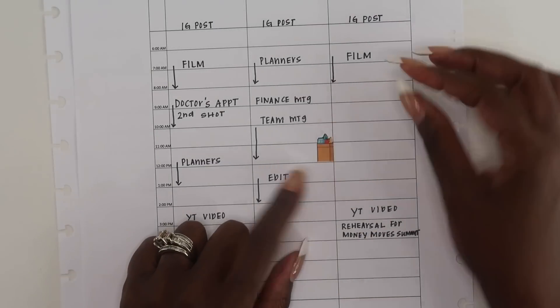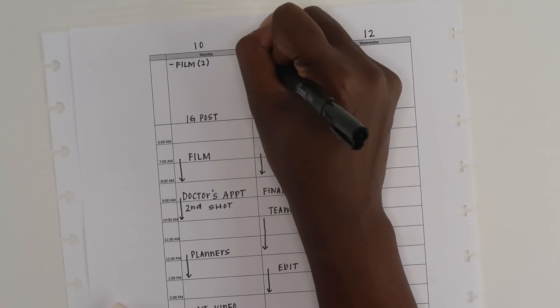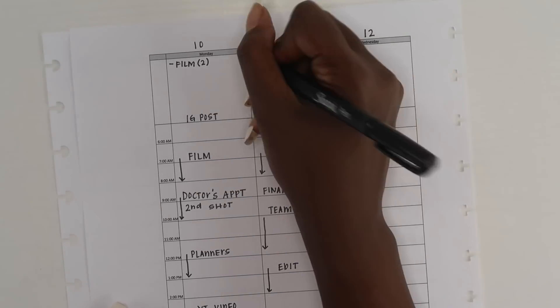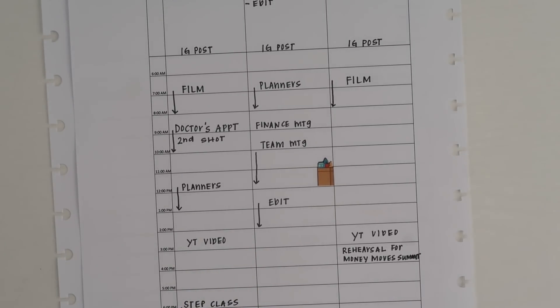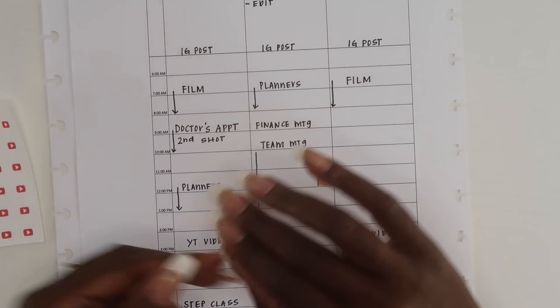For instance, right after our team meeting I need to go and get groceries. It's going to take us about an hour to pick up the groceries. Instead of me writing that in, I will use a little grocery bag to let myself know that that's something I need to do at this specific time.